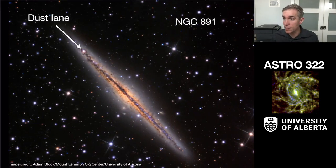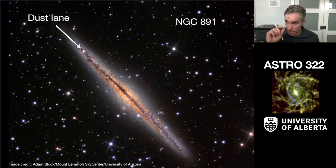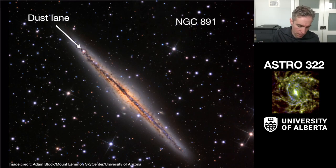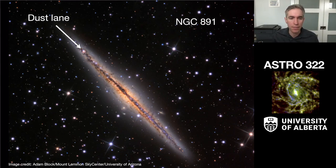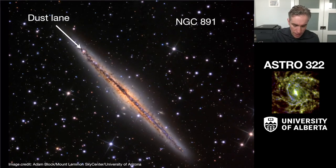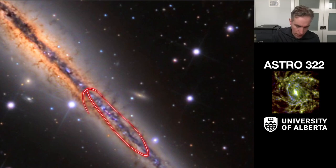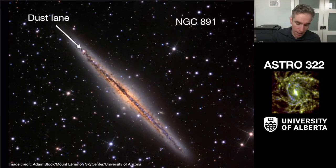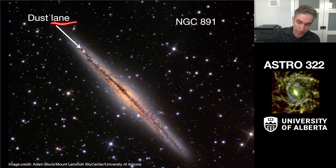Here's another galaxy — a disk system seen edge on. I like this image because it illustrates just how thin the disk is compared to its extent. You can see some evidence of a bulge with a slight thickening in the middle. And then you see the dark feature down the center of the galaxy — that's called the dust lane. That is the presence of interstellar medium in the midplane blocking out the starlight from behind it. The dust is blocking light through most of the disk, and this is really one of the archetypical views of a dust lane.